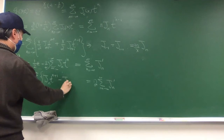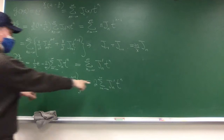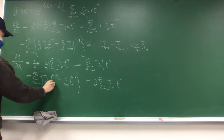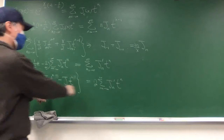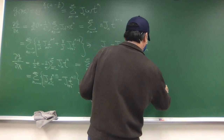Expanding, the first term is J sub n times t to the n plus 1 and minus J sub n times t to the n minus 1. We want everything in terms of t to the n, so after index shifting: this changes to J_{n-1} and this becomes J_{n+1}. Comparing coefficients gives J_{n-1} minus J_{n+1} equals 2 times J_n prime.